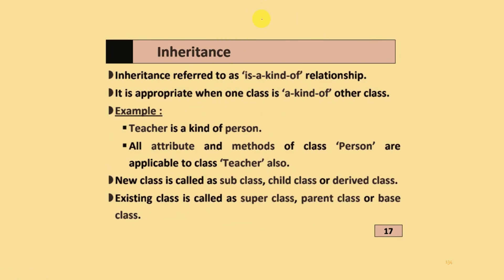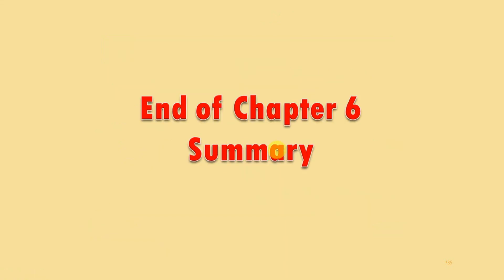Inheritance: Inheritance is referred to as an "is-a-kind-of" relationship. It is appropriate when one class is a kind of another class. Example: Teacher is a kind of person. All attributes and methods of class Person are applicable to class Teacher also. New class is called the sub class, child class, or derived class. Existing class is called the super class, parent class, or base class. This is the end of chapter 6 summary. Thank you.